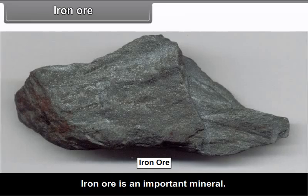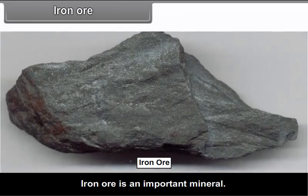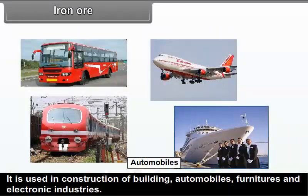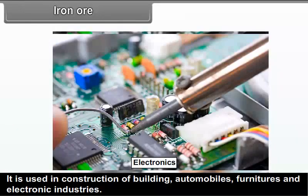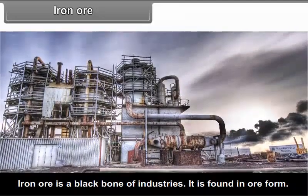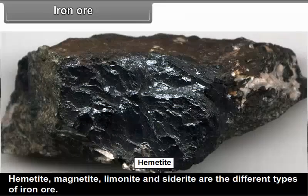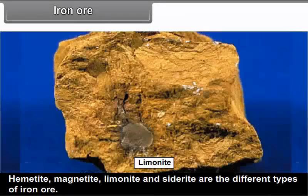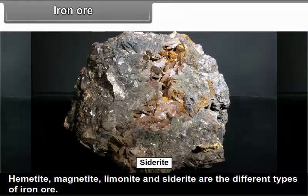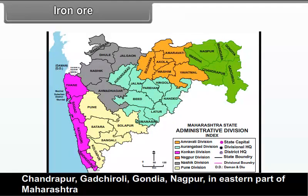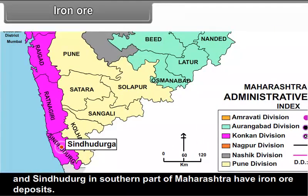Iron Ore: Iron ore is an important mineral used in the construction of buildings, automobiles, furniture and electronic industries — it is a backbone of the industries. It is found in ore form. Hematite, Magnetite, Limonite and Siderite are the different types of iron ore. Chandrapur, Gadchiroli, Gondiya and Nagpur in the eastern part of Maharashtra, and Sindhudurg in the southern part of Maharashtra, have iron ore deposits.